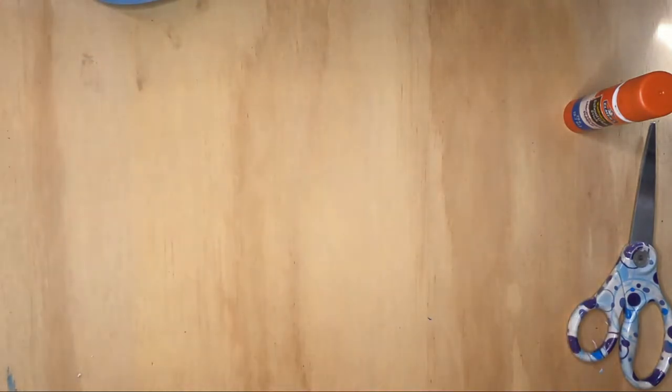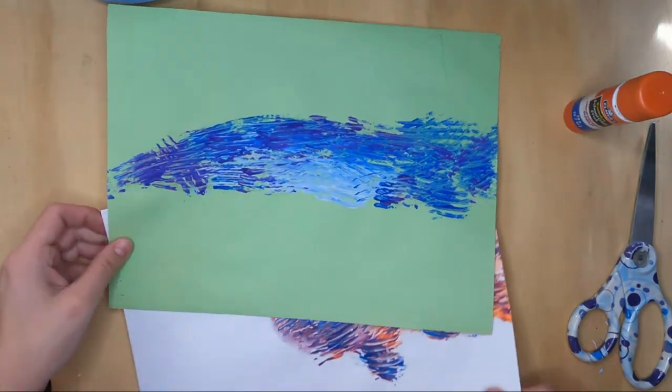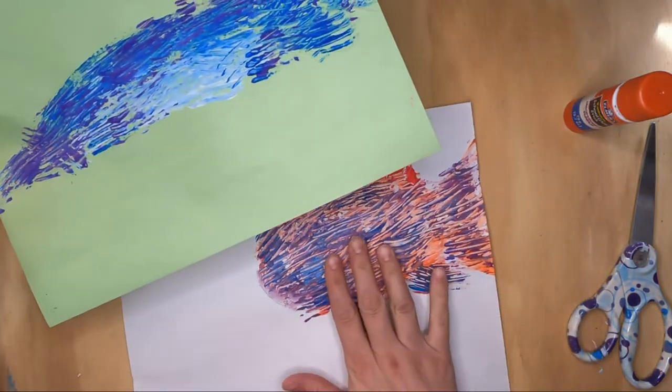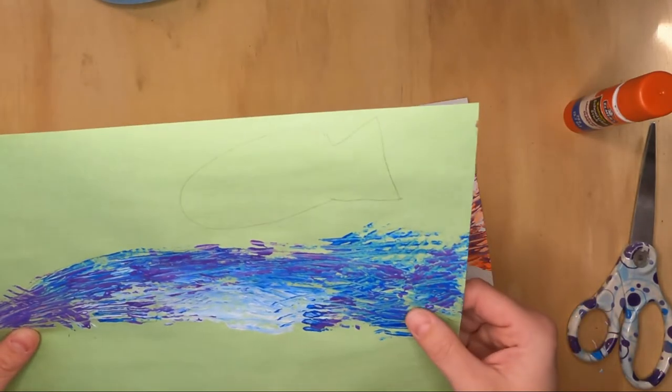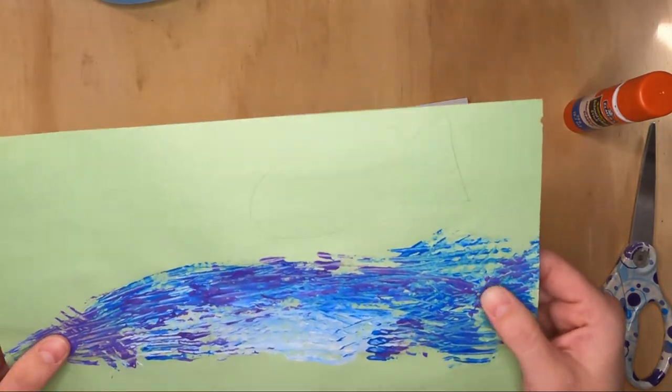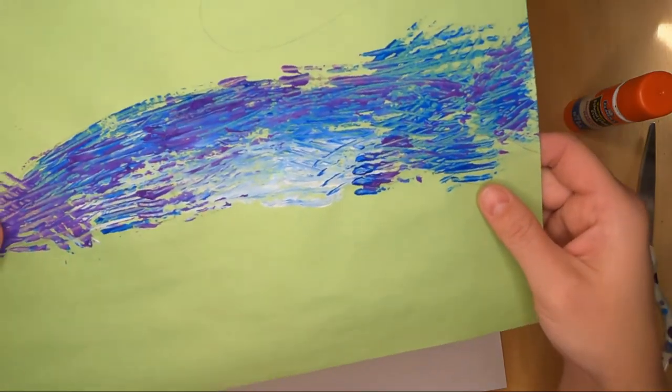All right, I'm going to put that to the side now and my fish are dry. Just like that. Very nice. Now I should have mentioned the paint I used was just a Crayola paint but it was thicker than the average paint and I thought it added a really neat texture.